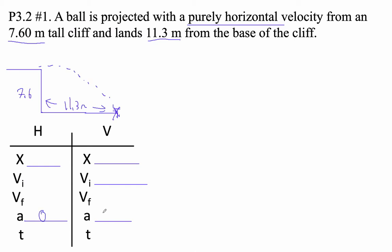So this guy is 0 and negative 9.8. This is 0 if it's purely horizontal. And then I feel like this guy is 11.3 and this guy is negative 7.6. It's negative because it's down, right?